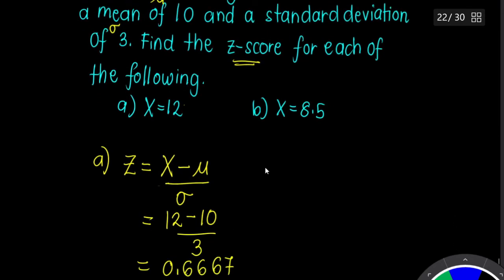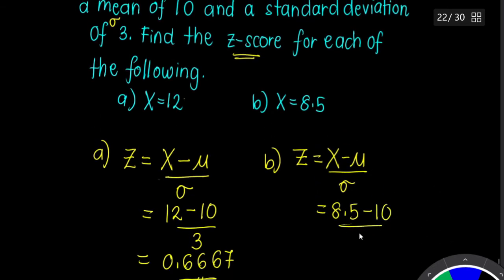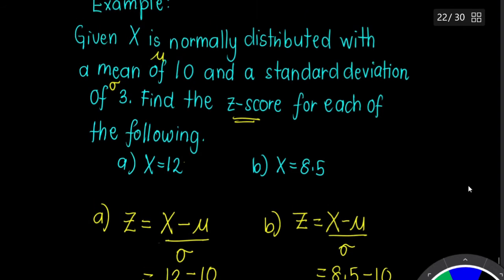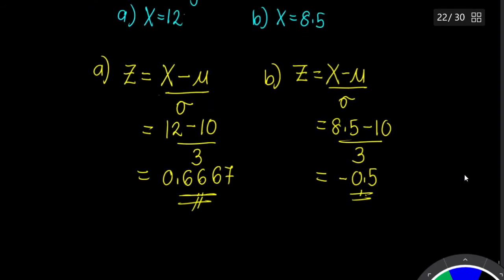For part B, similarly: Z = (X − μ) / σ = (8.5 − 10) / 3 = −0.5. Remember, a negative value means it will be on the left-hand side of the graph, while a positive value is on the right-hand side. This is how you find the Z-score.